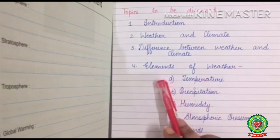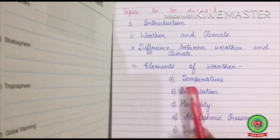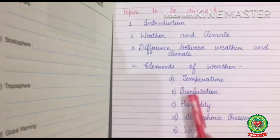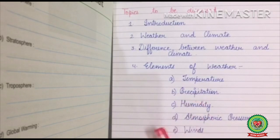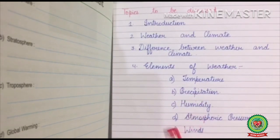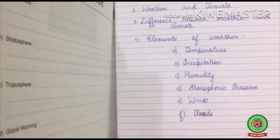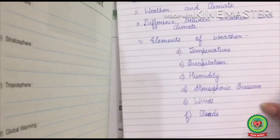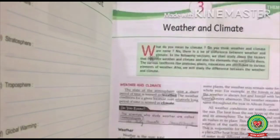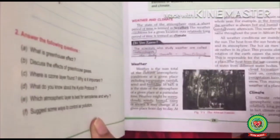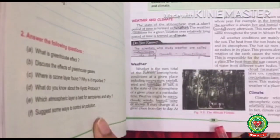In elements we will discuss: number one, temperature; number two, precipitation; number three, humidity; number four, atmospheric pressure; number five, winds; number six, clouds. Students, take out page number 29.